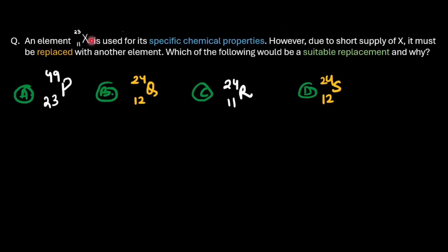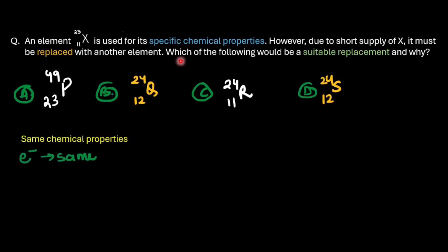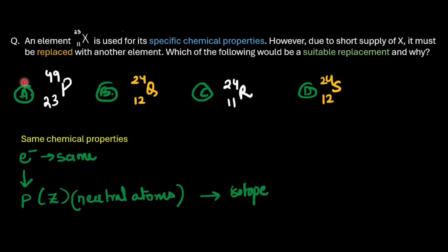In the next example, atom X with mass number 23 is used for its specific chemical properties. Due to a short supply of X, it has to be substituted with another atom. Which of the following would be a suitable replacement and why? Since we need the same chemical properties, the replacement must have the same electronic configuration. The number of electrons equals the number of protons in a neutral atom, so we are looking for an isotope of X — one with the same value of Z. Therefore, R would be a suitable replacement for X.